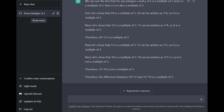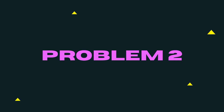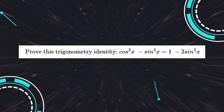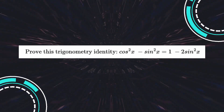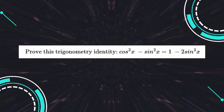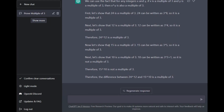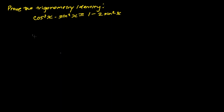Let us move on to the next question, asking ChatGPT the trigonometry identity question. The question we're going to ask is to prove that cosine squared x minus sine squared x equals 1 minus 2 sine squared x. In reality, to prove this trigonometry identity, all we need to do is apply the Pythagorean theorem.